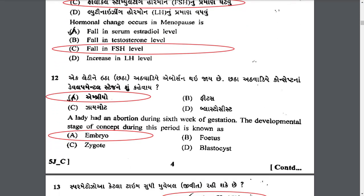A lady had an abortion during the sixth week of gestation. What is the developmental stage of the conceptus during this period? The developmental stage of the conceptus during this period is known as embryo. At the end of the eighth week after fertilization, the embryo is considered a fetus.